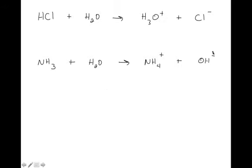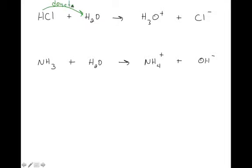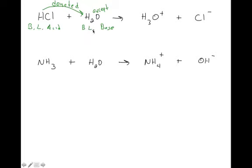Let's look at two Bronsted-Lowry acid-base reactions: HCl reacting with water to produce H3O⁺ plus Cl⁻, and NH3 plus water producing NH4⁺ and OH⁻. For HCl: as it goes from left to right, the H is gone — it got transferred to the water, so HCl donated the hydrogen, making it the Bronsted-Lowry acid. The water accepted the hydrogen, making water the Bronsted-Lowry base. You always have both present — a Bronsted-Lowry acid paired with a Bronsted-Lowry base.